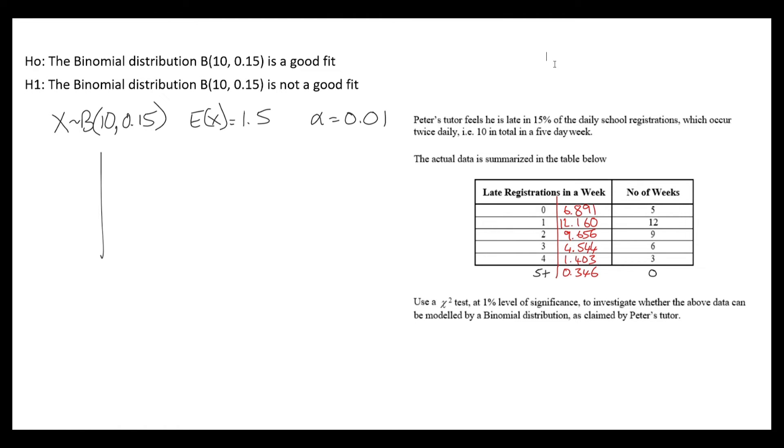Looking at the expected values that we have, we don't want any expected values to fall below 5. So we're going to need to group some of these together. 3, 4 and 5 plus, we're going to group those together and we can just call them 3 plus. I'm just going to summarize the observed values and here's the expected values. I've added 6, 3 and 0 to make 9. And I'm adding 4.544, 1.403 and 0.346 to get 6.293. Now all of my expected are above 5 and we can go ahead with our chi-squared calculations.